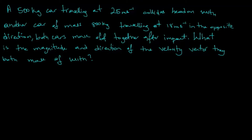This question says a 500 kilogram car traveling at a speed of 25 meters per second collides head-on with another car of mass 800 kilograms, which is traveling at a speed of 18 meters per second in the opposite direction. Both cars move off together after impact, and the question asks us what is the magnitude and direction of the velocity vector they both move with.